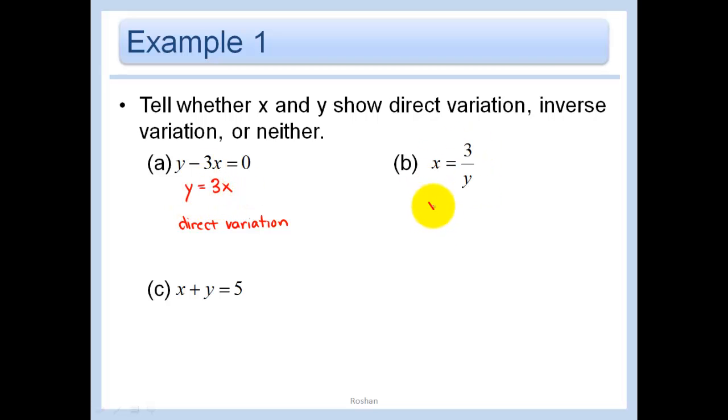In this example here, we would have Y equals 3 over X. If you need me to break it down, remember that if you multiplied both sides by Y, we get XY equals 3, divide by X, divide by X, Y equals 3 over X. And so this is inverse variation.